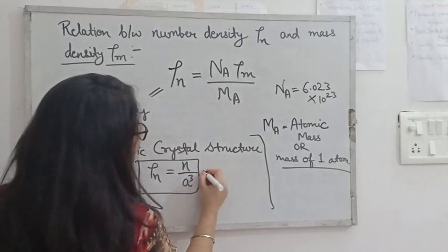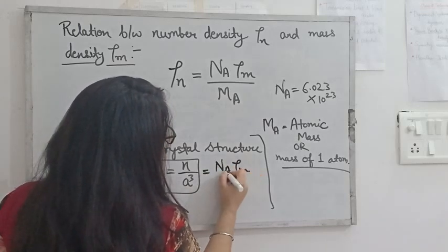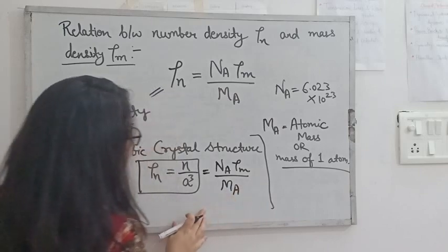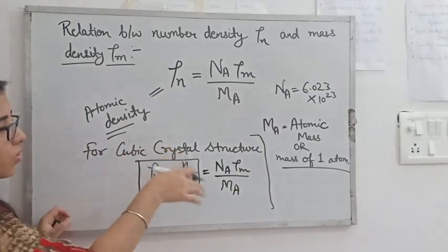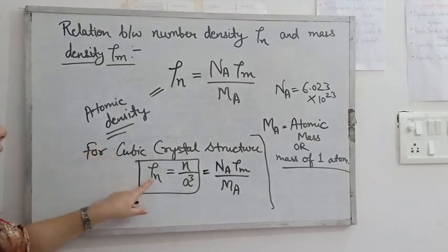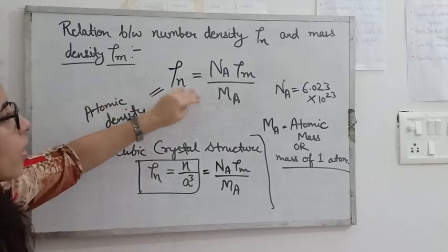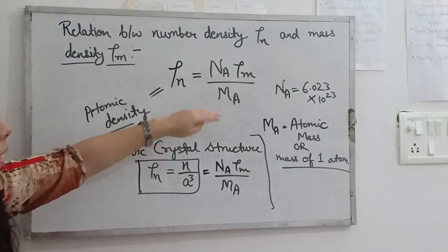Now this formula for cubic crystal structure, the ρₙ value is equal to that formula also. So we can write this as ρₙ equals n upon a³ equals Nₐ ρₘ upon Mₐ. I hope this is clear to you how these two are related if we are talking about crystal cubic structures.